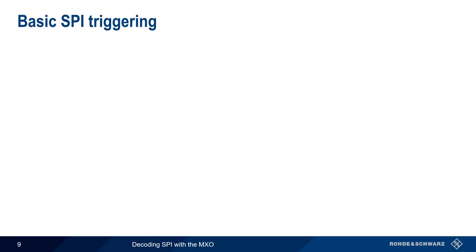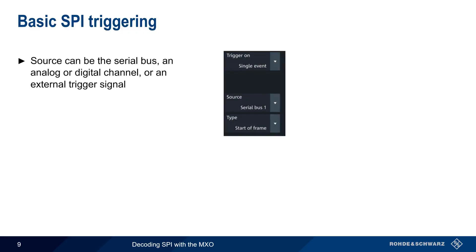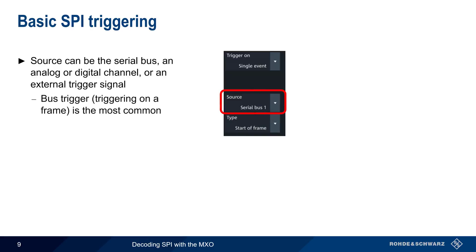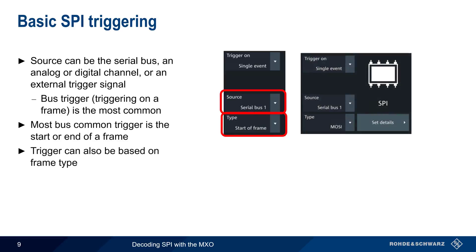The next step is configuring a trigger. Basic forms of triggering used to initiate data acquisition include an event on the serial bus, a voltage on an analog or digital channel, or an external trigger signal. A bus trigger — that is, triggering on a SPI frame or on its contents — is the most common form of trigger used when performing SPI decodes. In most cases, the bus trigger occurs either on the start or on the end of a frame. It's also possible to trigger based on specific frame types.